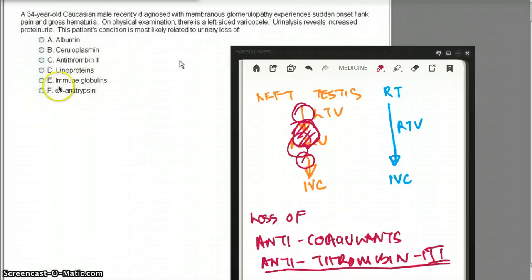Now let's talk about choice E, loss of immunoglobulins. Immunoglobulin loss will not cause hypercoagulable state. It's going to make the patient more prone to infection, especially pneumococcal infection.